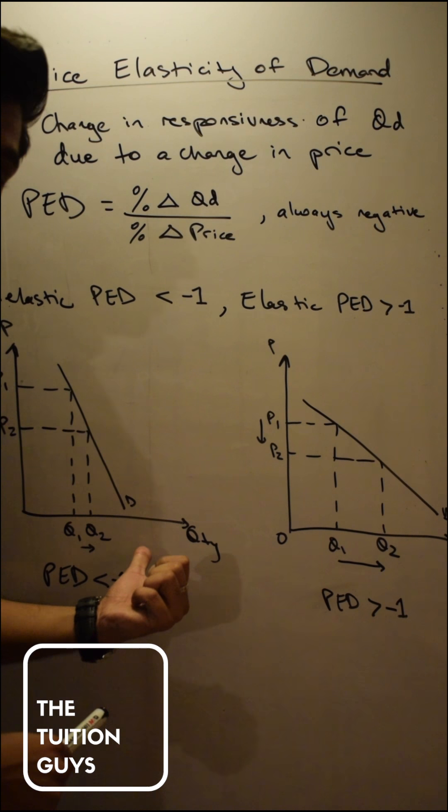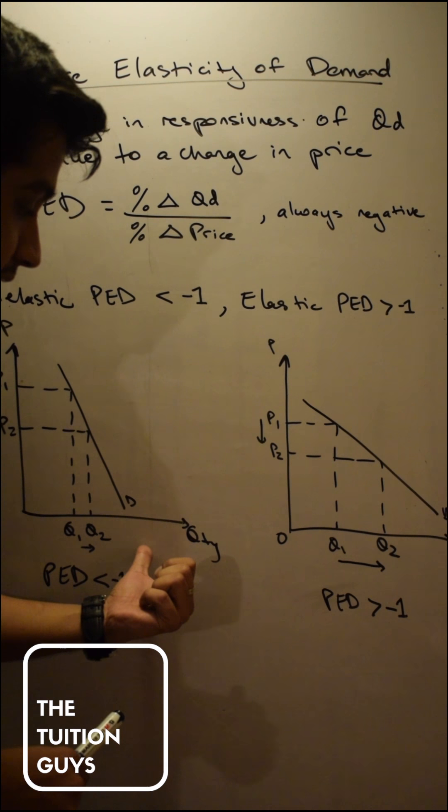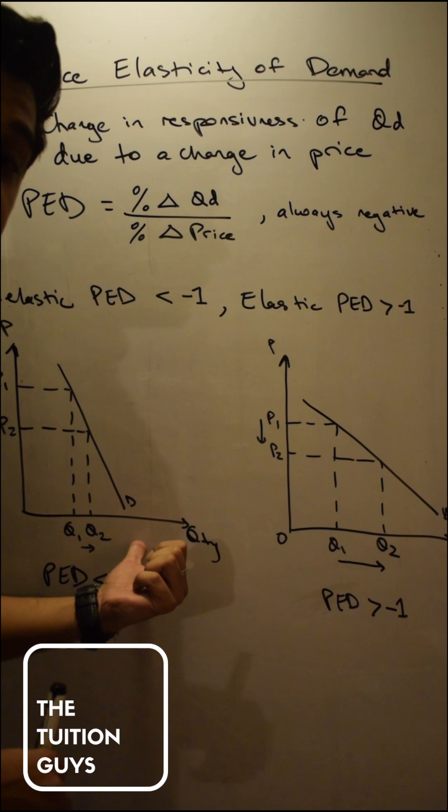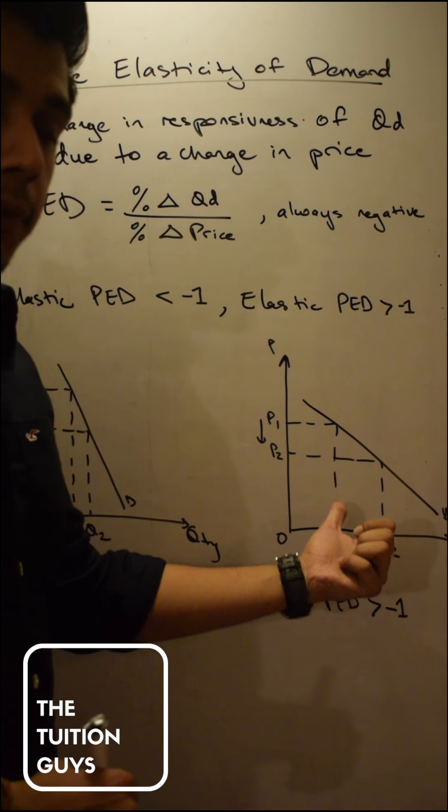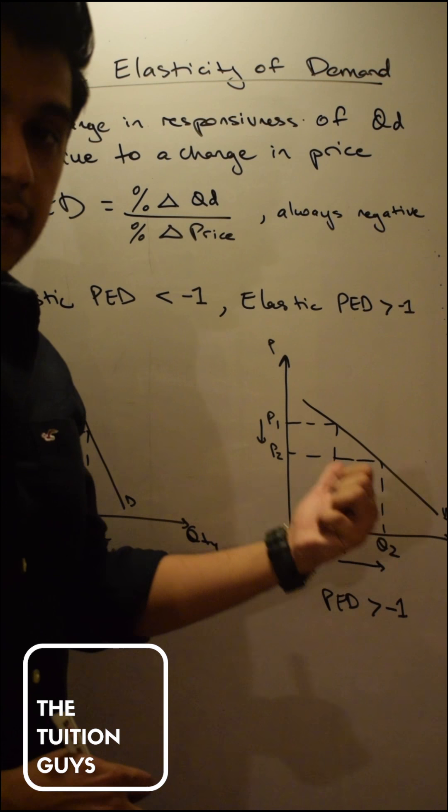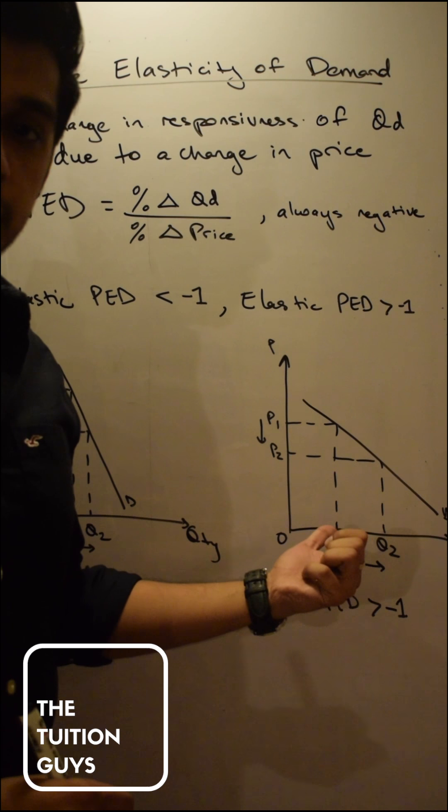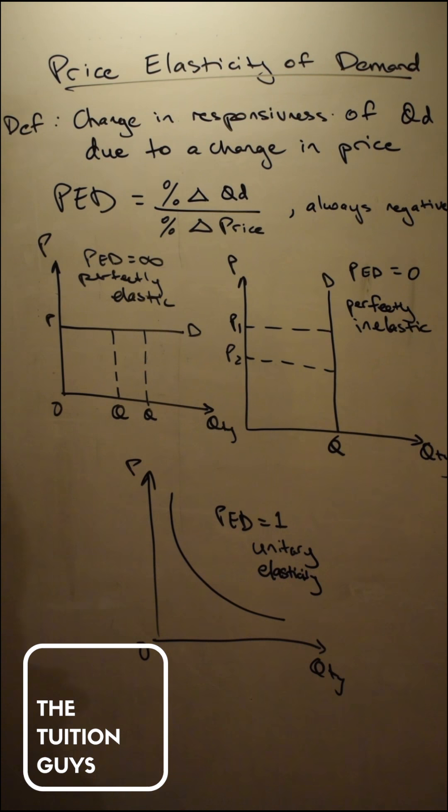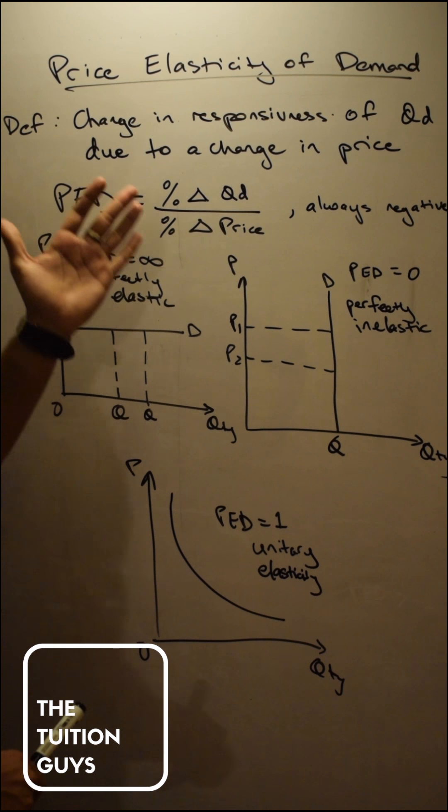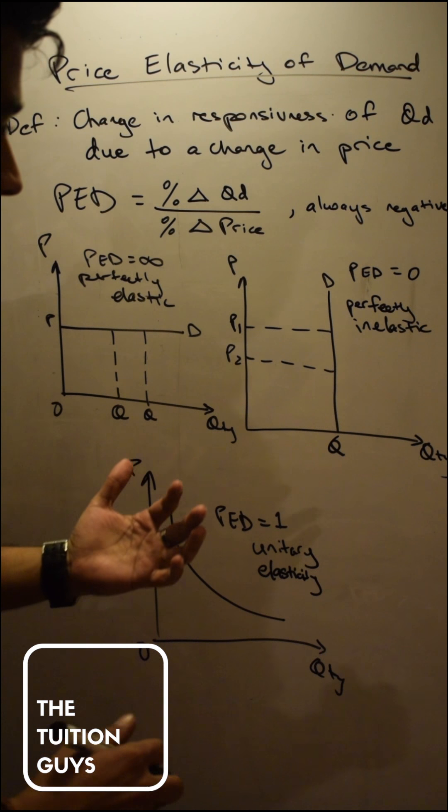Like cigarettes, like alcohol, all right, like life-saving drugs. But elastic goods are those goods which we can live without, which we don't necessarily need in our day-to-day lives, and which are mostly luxury products as well. All right, take a screenshot. I'm going to show you one more variation of elastic elasticity.